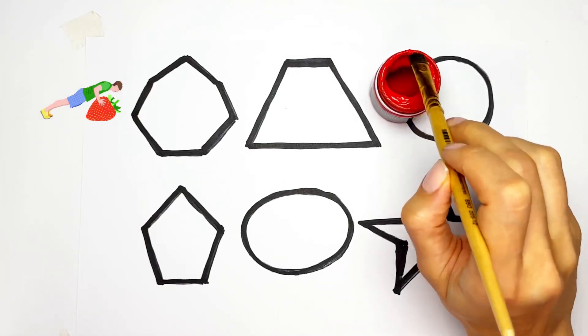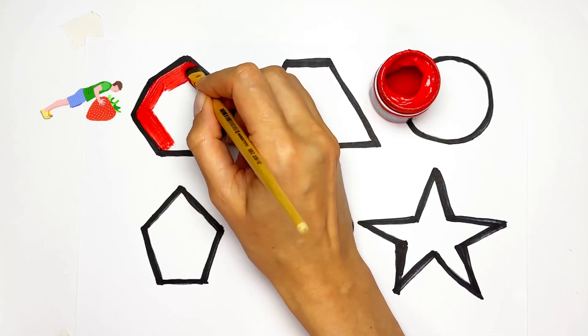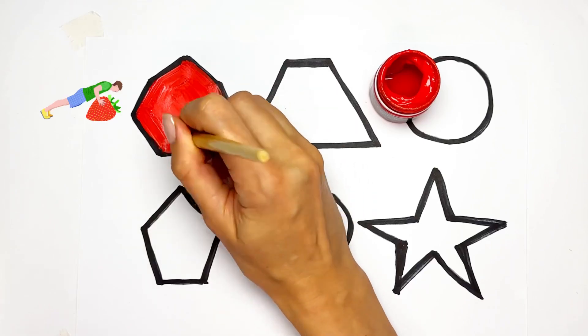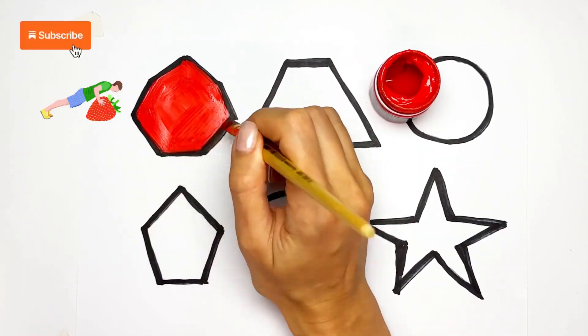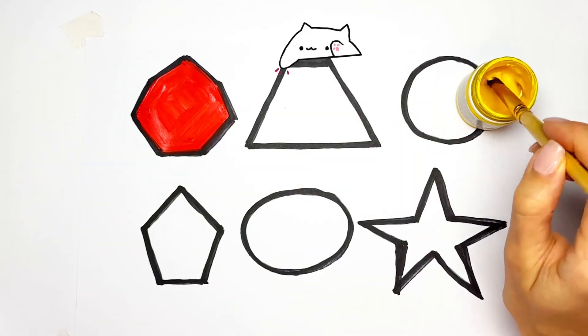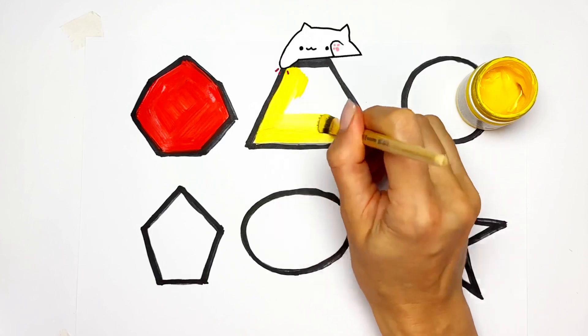Red color. Yellow color. Okay, yellow color for Trapezoid.